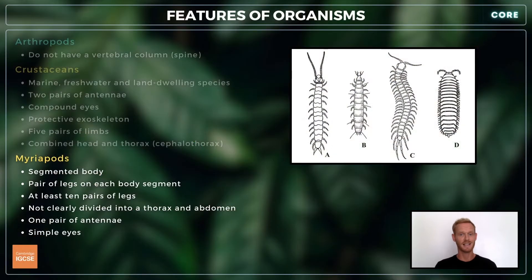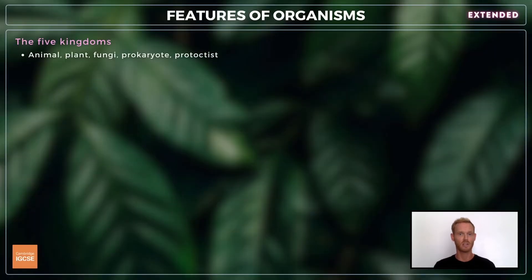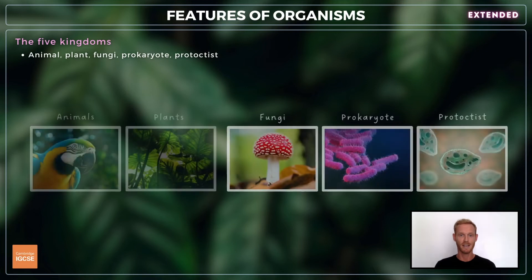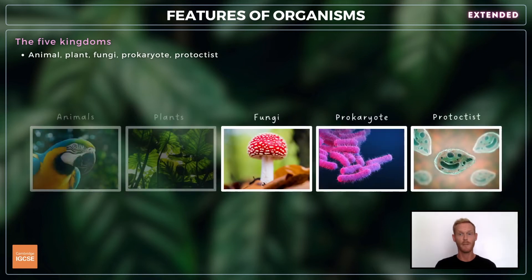That's everything for the core section, so we'll move on to the extended content. For extended, you need to know the main features of three more kingdoms in addition to plants and animals: fungus, prokaryote and protoctist.